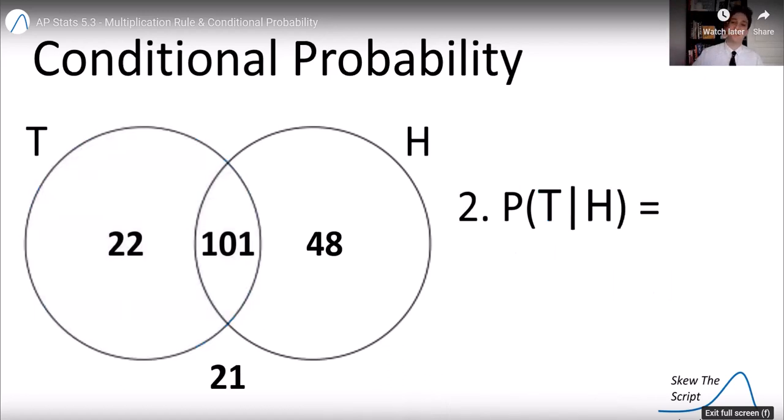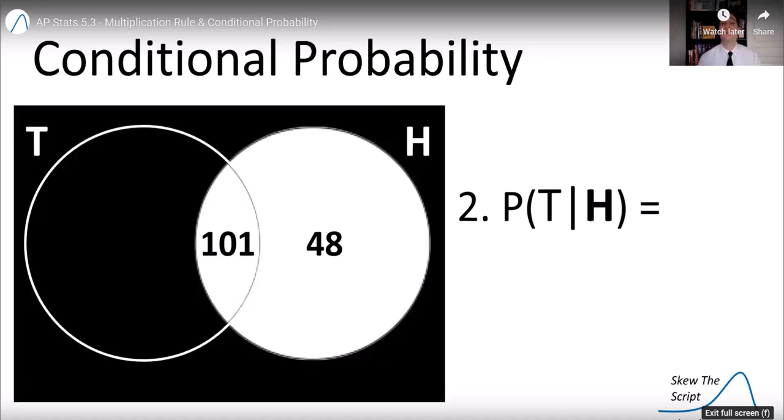Now let's look at a different situation. Let's find the probability of selecting someone who is tall, given they were a high income earner. So in this case, let's look at the given first. We know they have to be a high income earner.